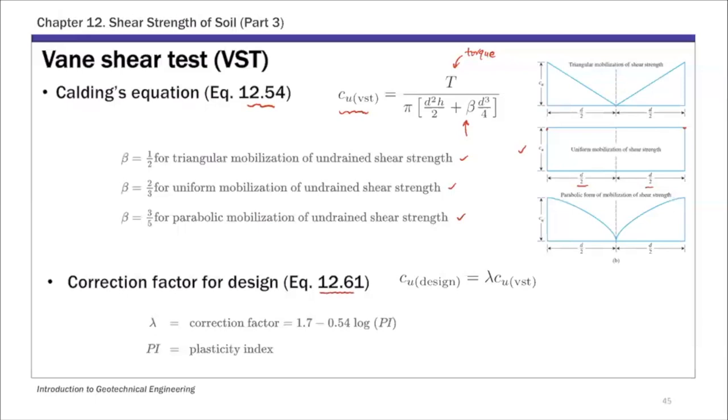And then it's this equation 12.61. So the Calding's equation basically gives you that CU from VST. For foundation design, it is found that as the plasticity of soil increases, the CU value calculated from this Calding's equation may be unsafe. So that's why there's a correction factor. This lambda is a correction factor you apply to the value calculated from CU VST. And you use the corrected value for designing purposes. And this correction factor lambda is a function of soils plasticity index PI. So that's this equation 12.61. So basically apply some correction based on the plasticity of soil. And there are different types of corrections. And the one I'm listing here, this is one of the commonly used ones.